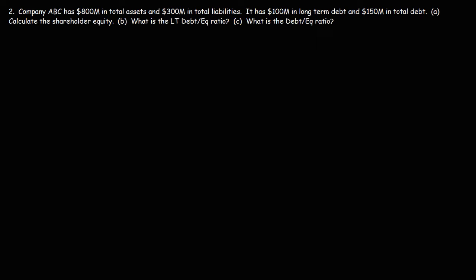Now let's move on to number two. Company ABC has $800 million in total assets and $300 million in total liabilities. It has $100 million in long-term debt and $150 million in total debt. Feel free to pause the video and work on these examples, then play it when you're ready to see the solution. Let's start with Part A.